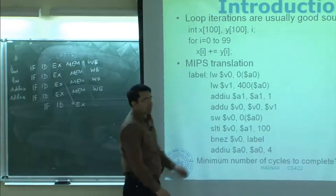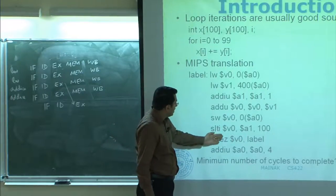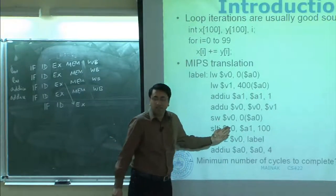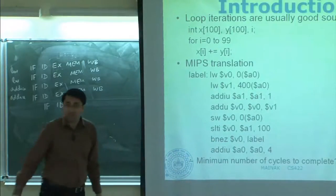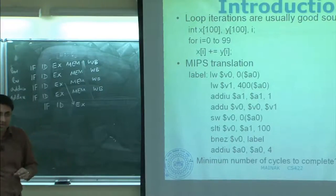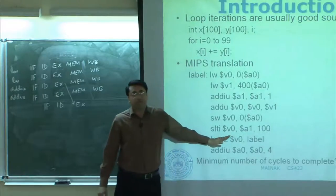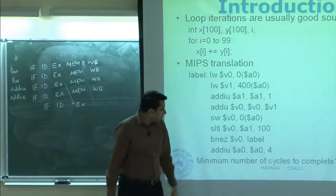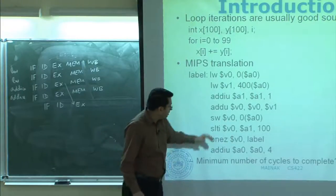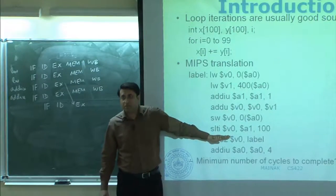Use some other register except v0. Use some other register except anything used here, so you would not violate any dependence. These are often called name dependencies — these are not true dependencies, they are actually false dependencies. They arise only because the compiler happened to choose this register for allocating the result of this operation. We will come up with systematic solutions to get rid of name dependencies. Name dependencies are false dependencies and they should never hamper your ILP.